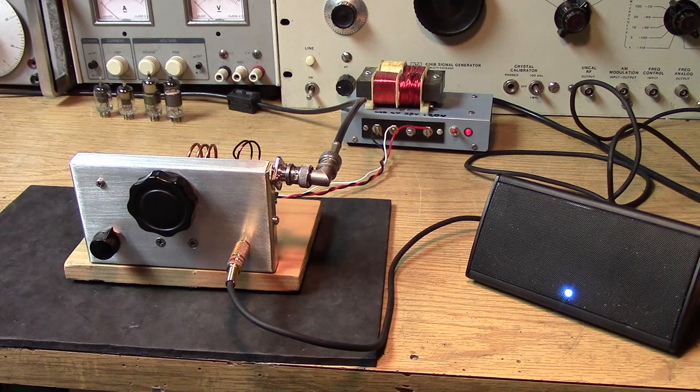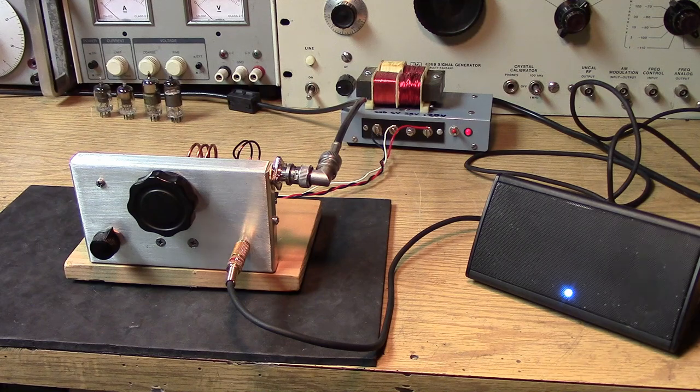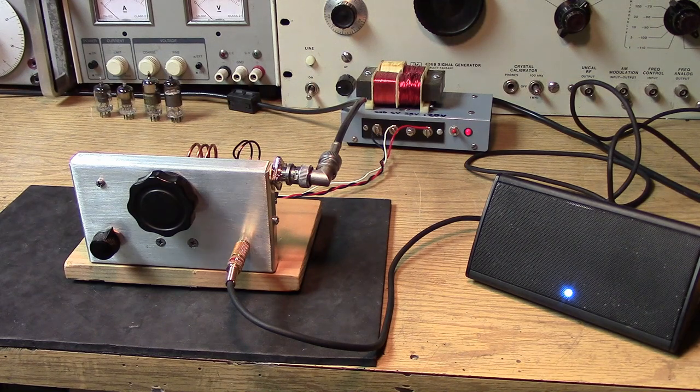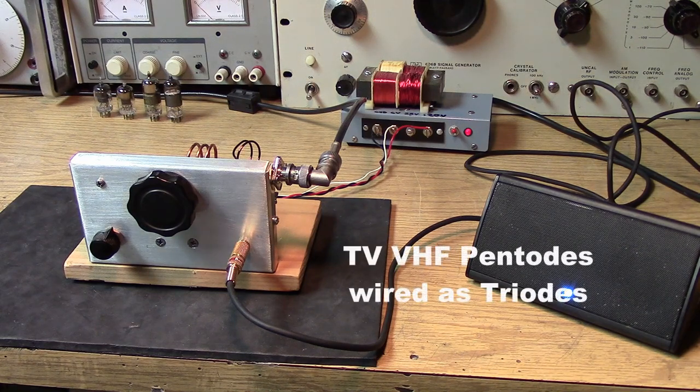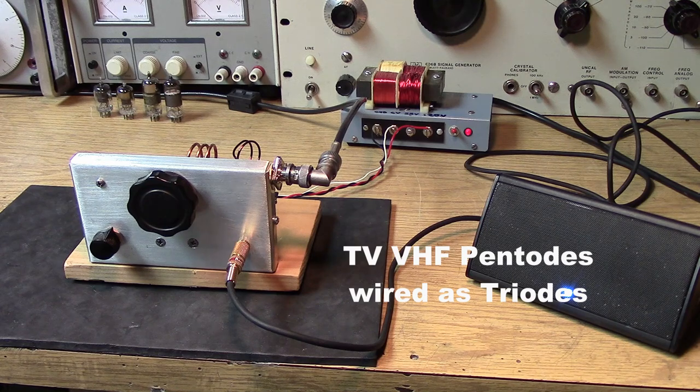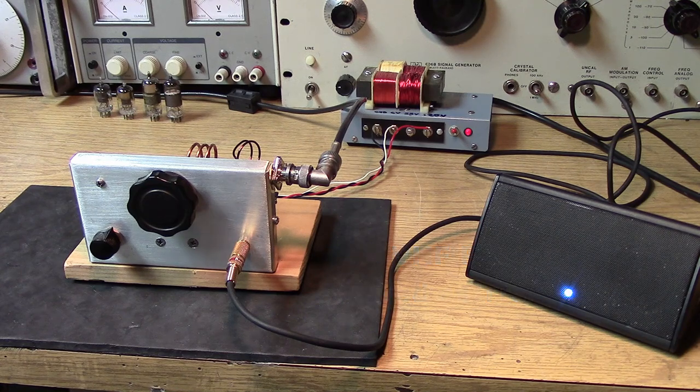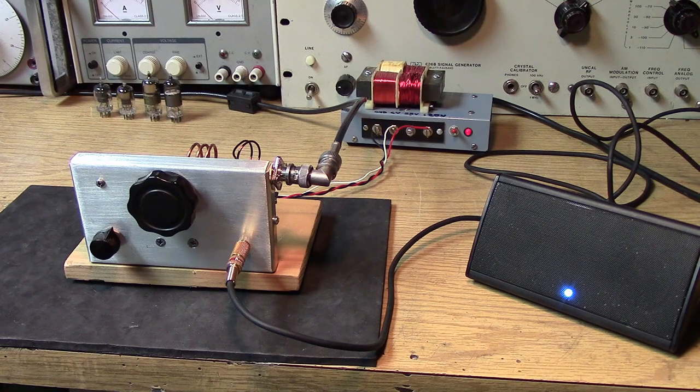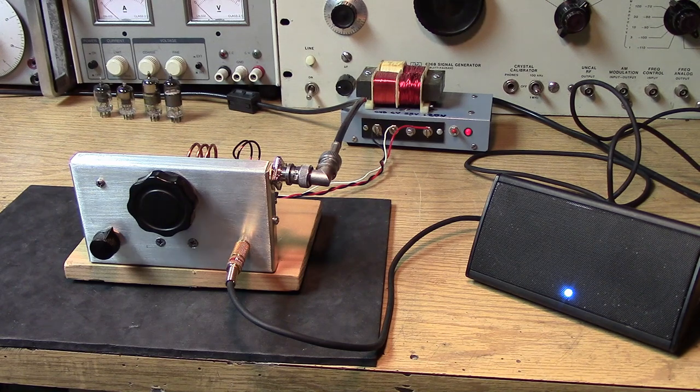What I'm finding is that the 6GM6-6BZ6 is outperforming the 6AK5. It's more stable, gives more output, it's a much happier tube.